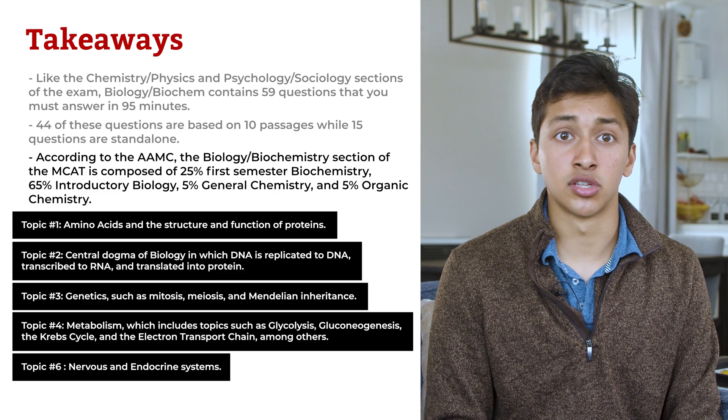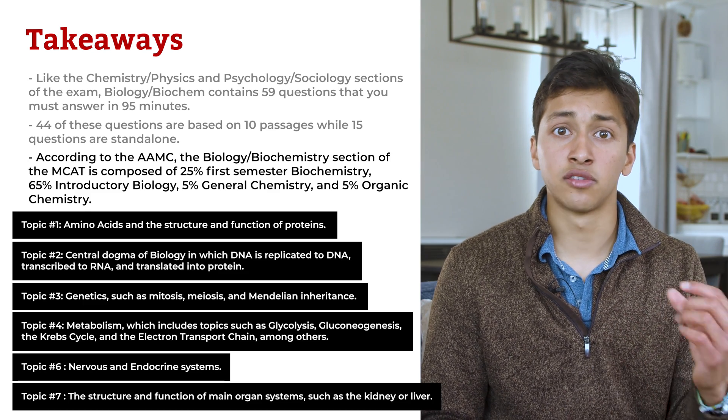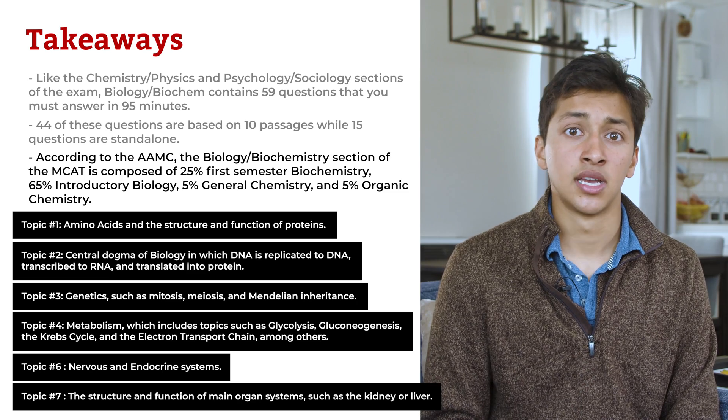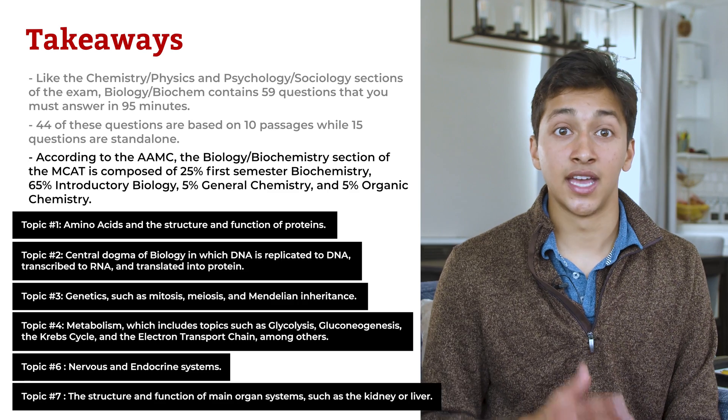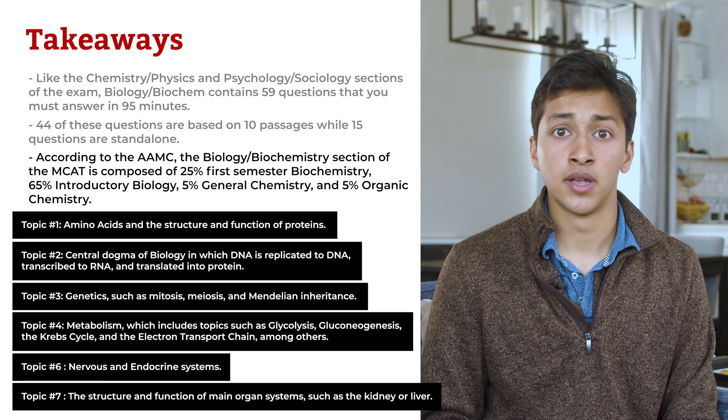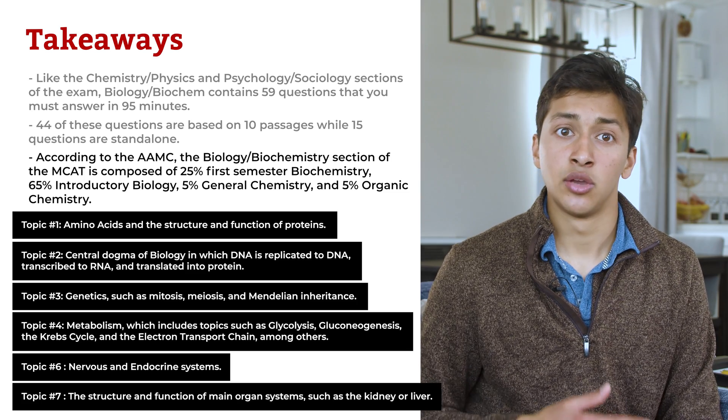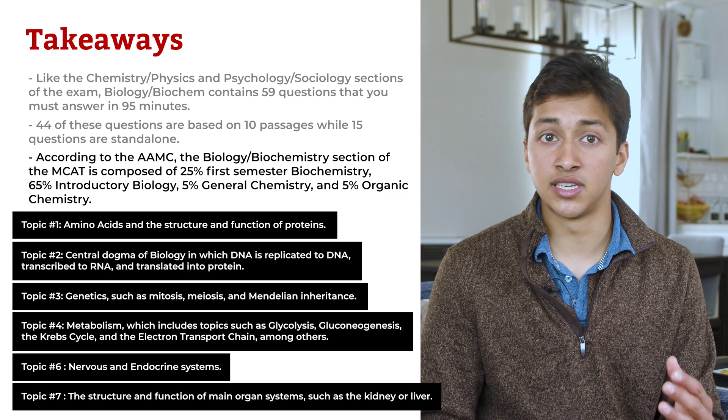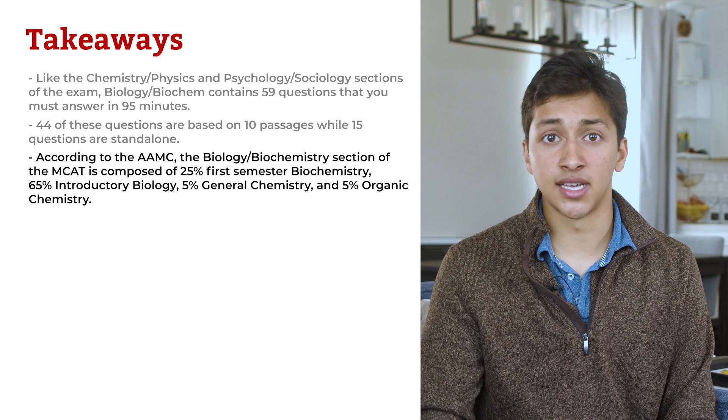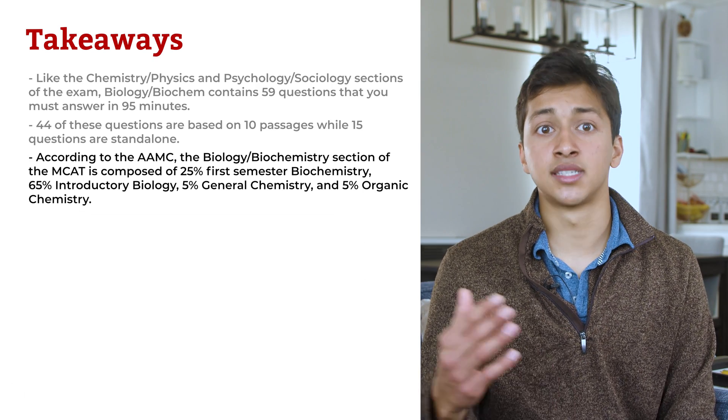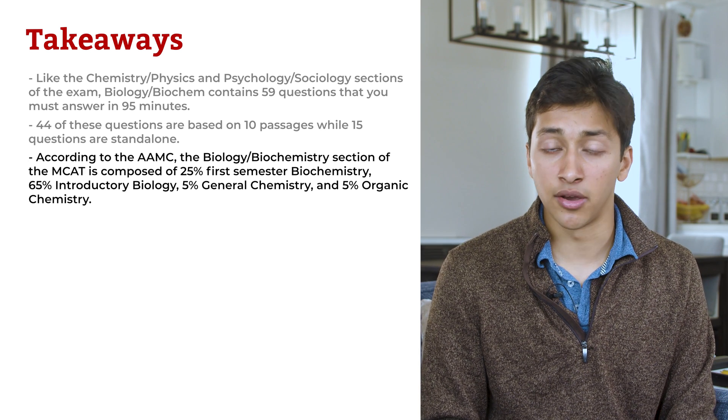Topic number 6 covers the nervous and endocrine systems, and topic number 7 covers the structure and function of main organ systems, such as the kidney or liver. Many students worry that they have not yet taken physiology, and if that is the case, you are not alone. Using the building blocks from your introductory undergraduate biology class, you will be able to learn the level of detail tested on organ systems for the MCAT.